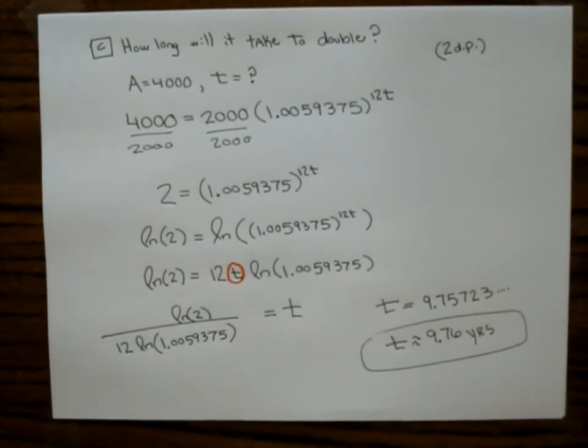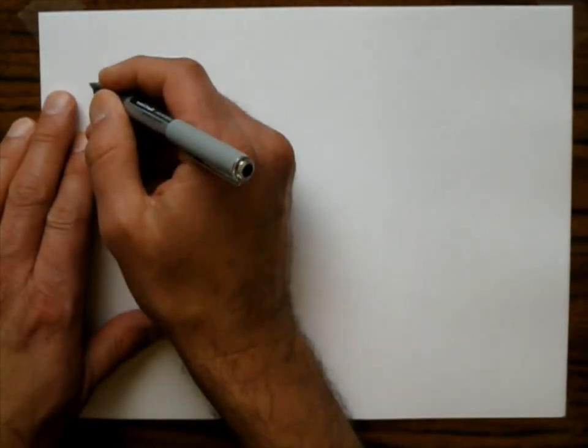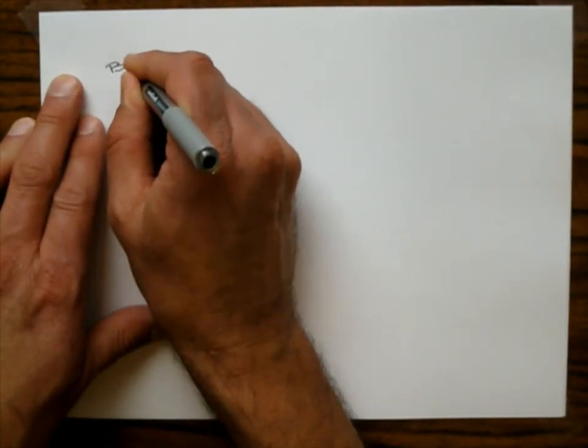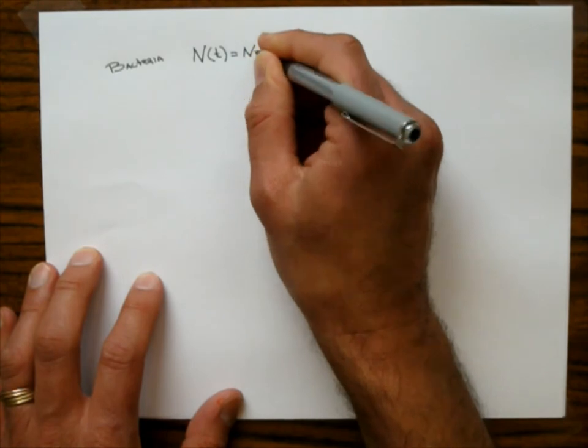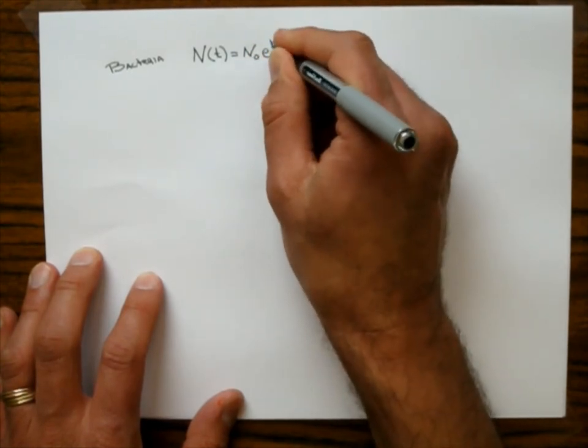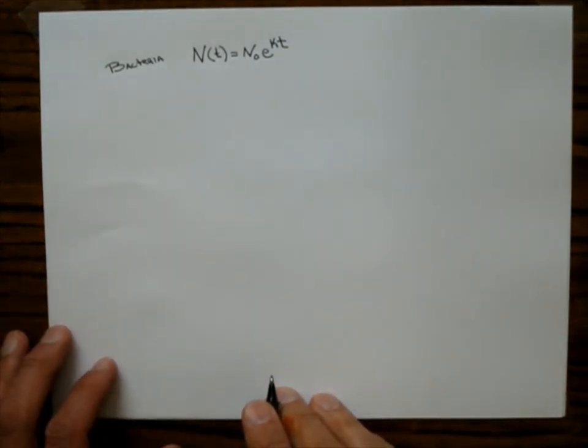Now I'll grab a problem from a calculus book to show you how the math connects. A bacteria culture follows the law of uninhibited growth using the model N(t) equals N-naught times e to the kt. The culture initially contains 100 cells, and after one hour there are 420 cells. Part A asks us to find the growth constant k.